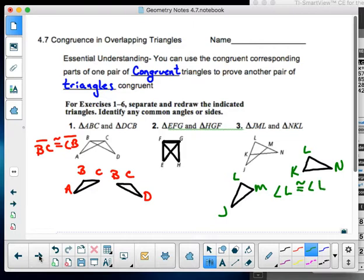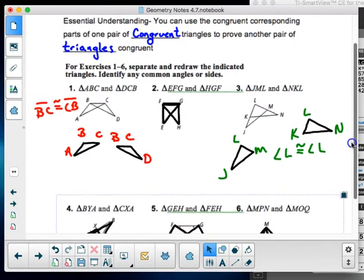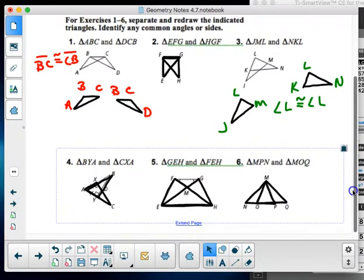So separate and redraw the indicated triangles. Identify any common angles or sides. So I identified the common angle and I identified the common side in one. So you will do the remainder in 2, 4, 5, and 6.